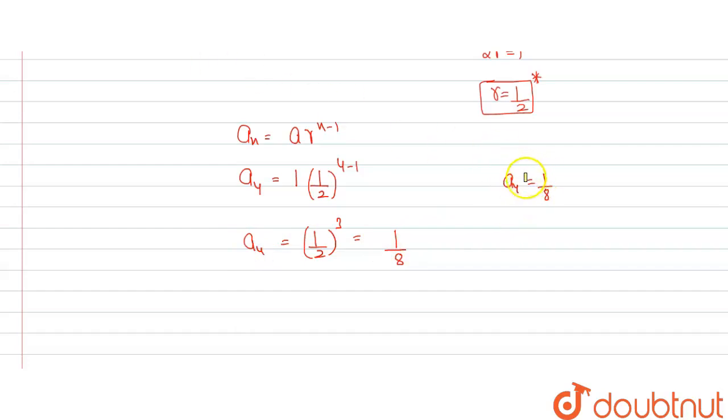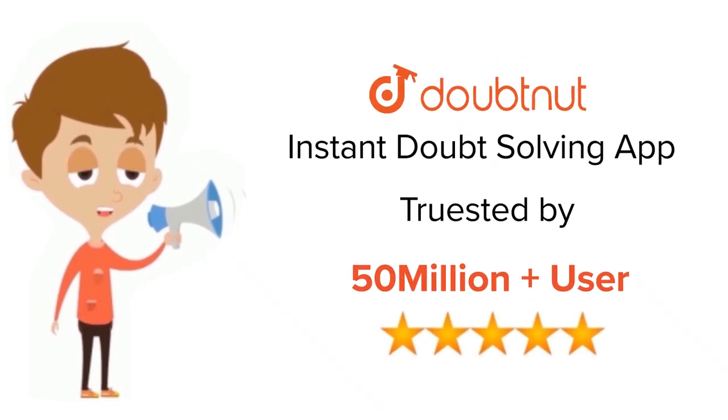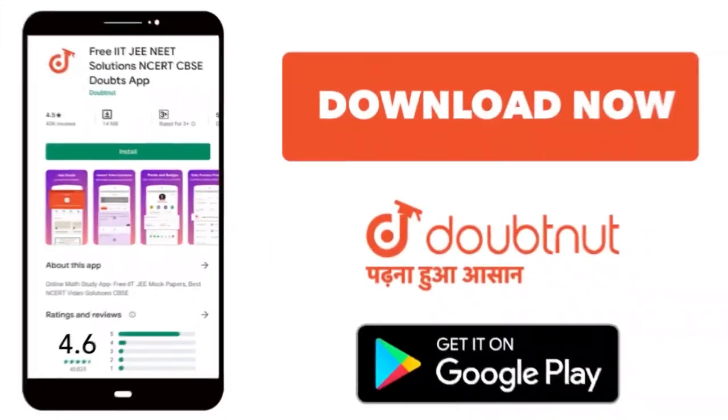So our fourth term is 1/8. Therefore answer is 1/8. Thank you for watching the video. For class 6 to 12, IIT-JEE and NEET level, trusted by more than 5 crore students, download Doubtnet app today.